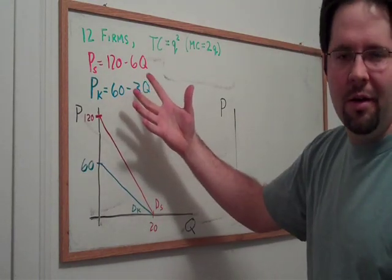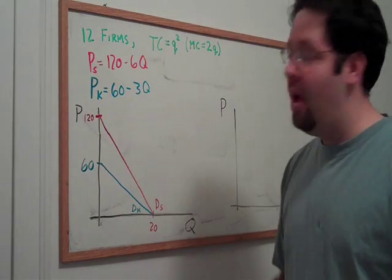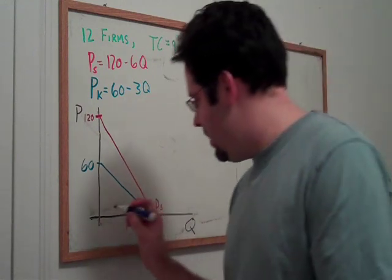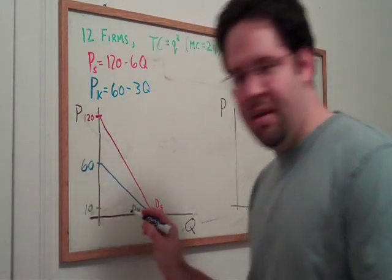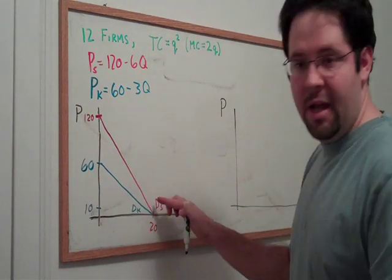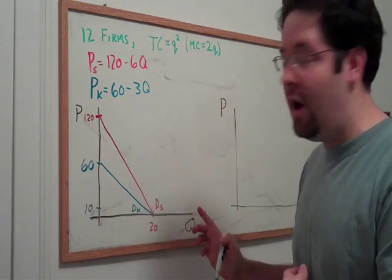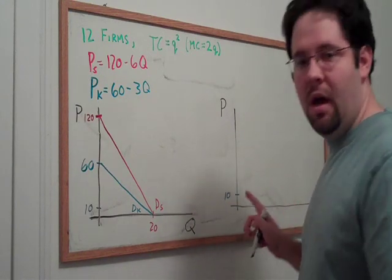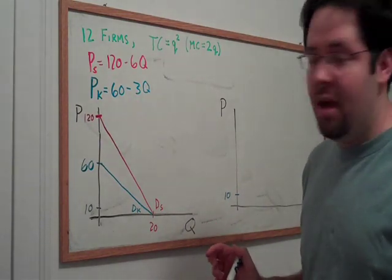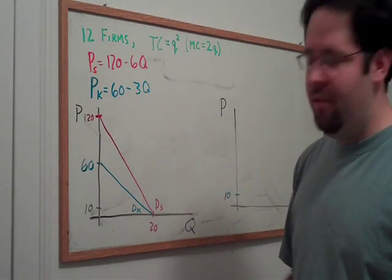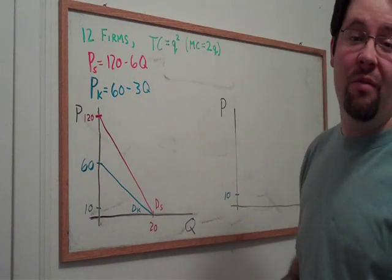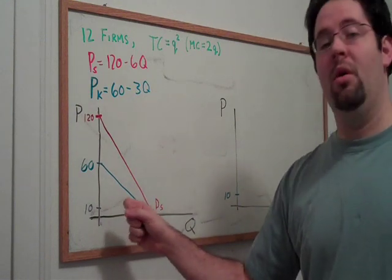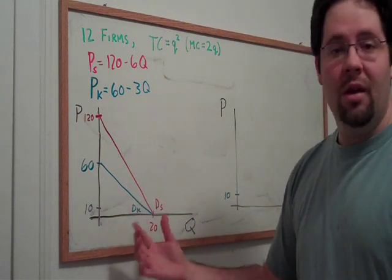How do we go from inverse demand curves like this to a market demand curve? All we do is we ask at each price, say a price like 10, what is the quantity in each of these demands? Then we add up those quantities and we can go over here to our market and proceed to give ourselves a point on our market demand curve.